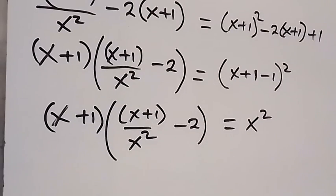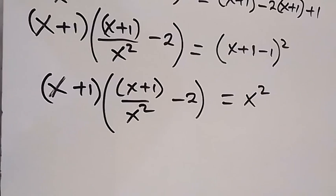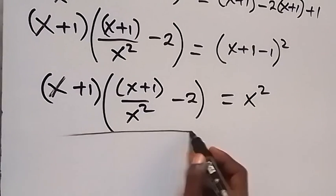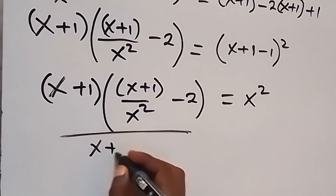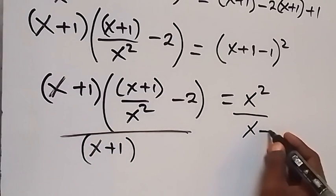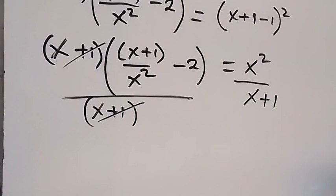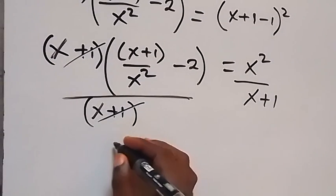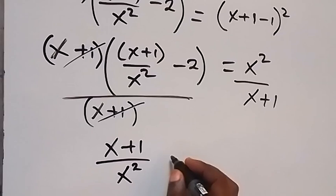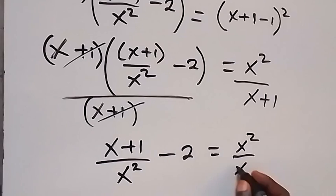Then, in the next step, we divide both sides by x plus 1. So, this side divided by x plus 1, and on this side also we divide by x plus 1, and then x plus 1 cancels x plus 1 here. Then what we have next: x plus 1 over x squared minus 2 equals to x squared over x plus 1.